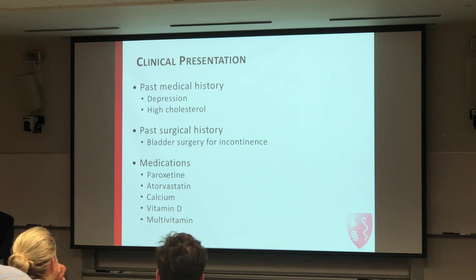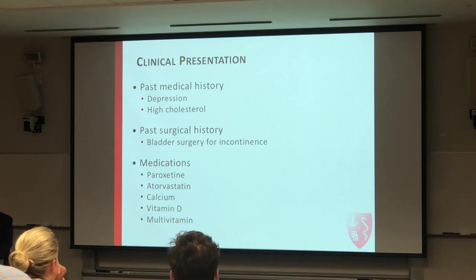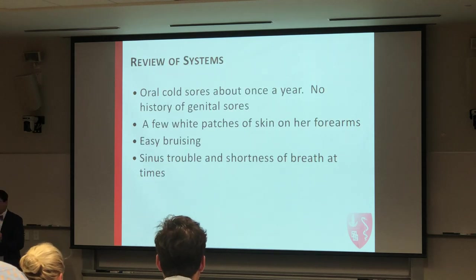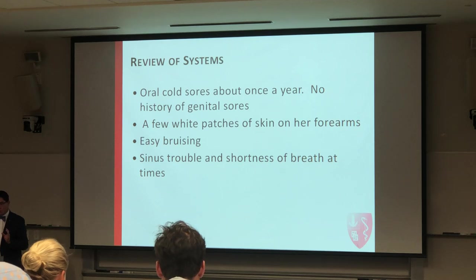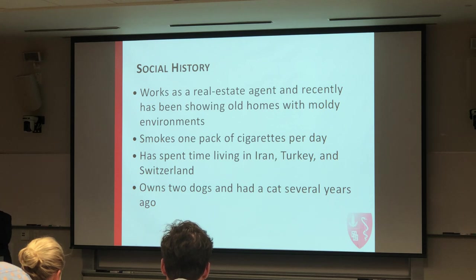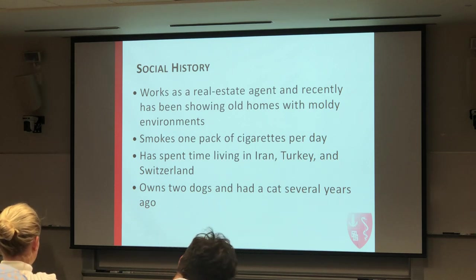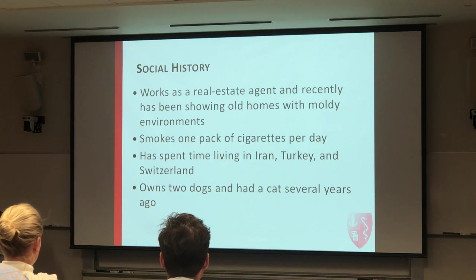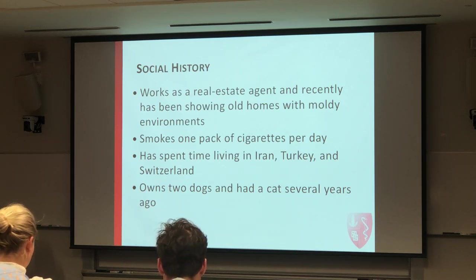She was a realtor. The Maryland real estate market was not doing well, so she was depressed and on several antidepressant medications. She has high cholesterol and has had multiple surgeries. She has a history of cold sores about once a year, no history of genital ulcers. She has a few white patches on the skin of her forearm and easy bruising. She recently had been showing old homes with a moldy environment, which I thought was very relevant. She smoked one pack per day, spent time living in Iran, Turkey, and Switzerland, and had two dogs and a cat several years ago.